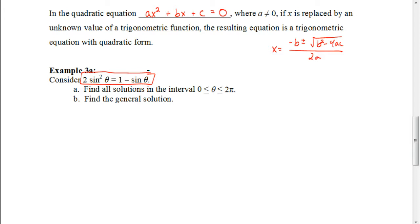If we have a situation like that where x is replaced by an unknown value of a trigonometric function, resulting equations like we have in example 3a, we say that it's a trigonometric equation with quadratic form.